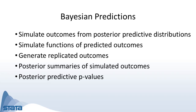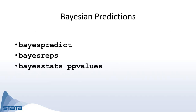We can use Bayesian predictions to simulate outcomes from the posterior predictive distribution, simulate functions of simulated outcomes, generate replicated outcomes, and calculate posterior summaries of simulated outcomes as well as posterior predictive p-values. There are three new commands for Bayesian predictions: bayes predict, bayes reps, and bayes stats ppvalues.